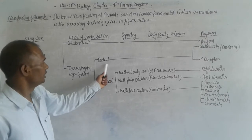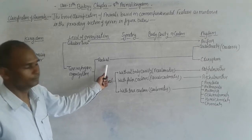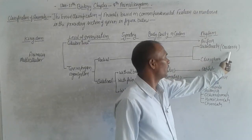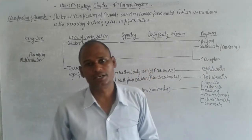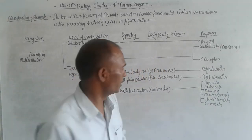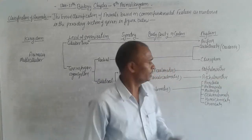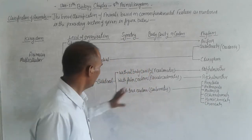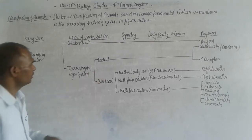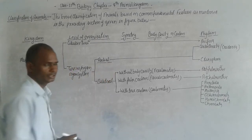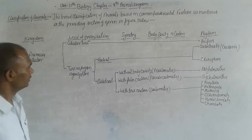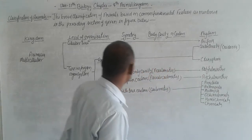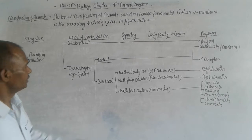Radial symmetry — we studied about symmetry. Cnidaria, also called Coelenterata, like Hydra, and Ctenophora. These organisms belong to radial symmetry type.